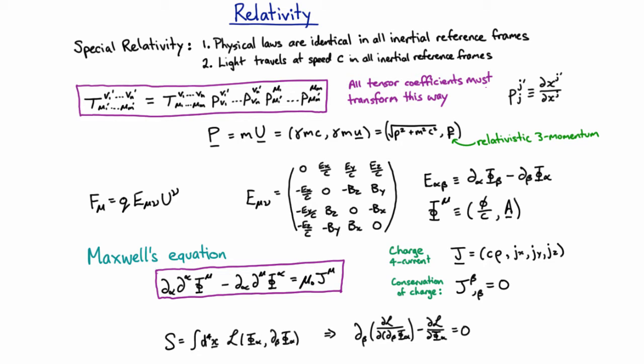We discovered the principles behind special relativity, which were very simple — two simple axioms — and they led us to discover that we were in fact not in a Euclidean space-time, but in Minkowski space-time. Therefore, we decided that in order to make sure all our physical laws obeyed special relativity properly, we put everything into tensor form, all our physical relationships into tensor form.